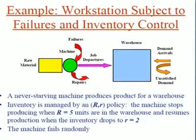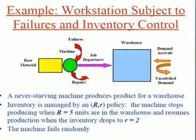When the inventory level crosses down the reorder point, the machine starts processing a sequence of jobs until the inventory level reaches the target R, at which point the machine suspends operation. The choice of capital R as the target value and small r as the reorder point is discussed with decision makers and is studied in inventory control policy.